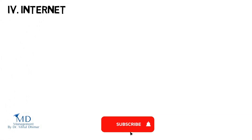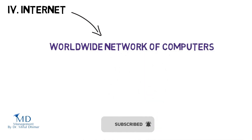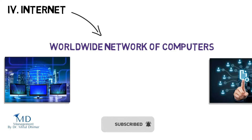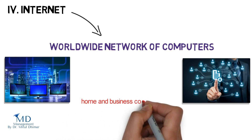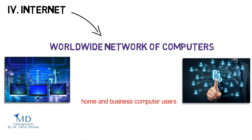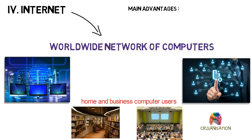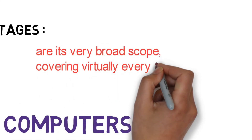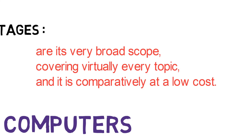4. Internet: The Internet is a worldwide network of computers that supports electronic communication and gives users access to information and documents from distant sources. It is a network of home and business computer users, libraries, universities, organizations, and so on. The main advantages of the Internet are its very broad scope, covering virtually every topic, and it is comparatively low cost.